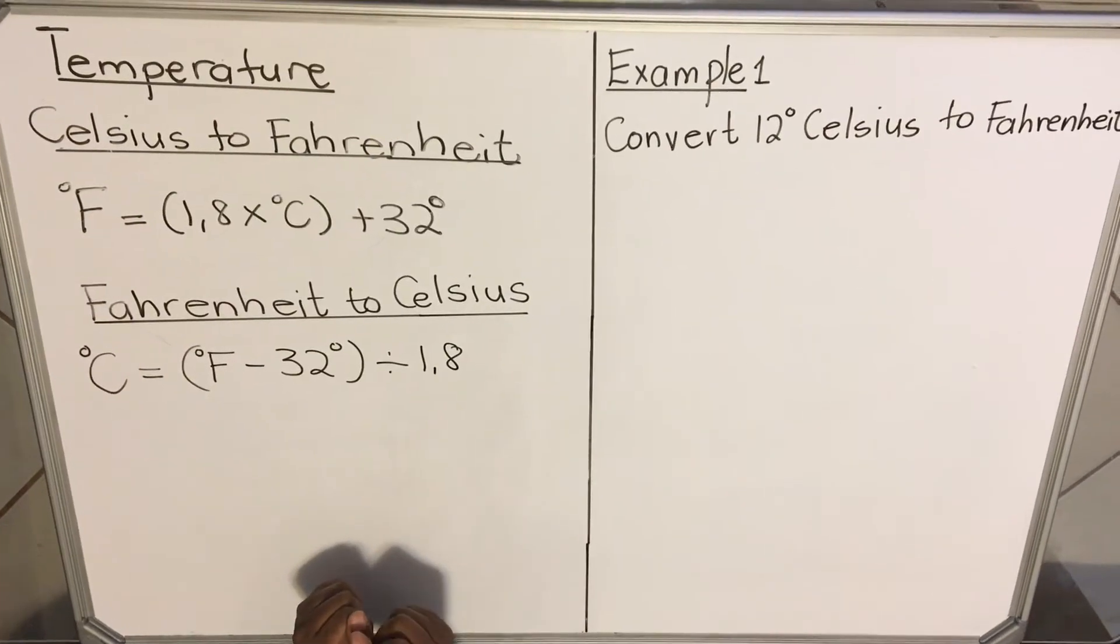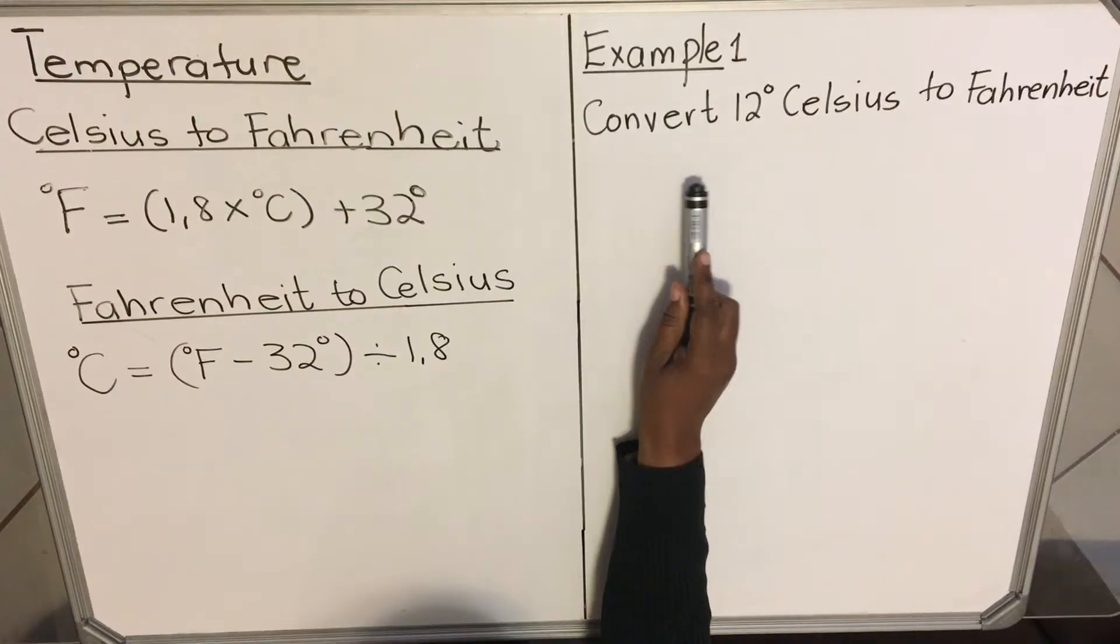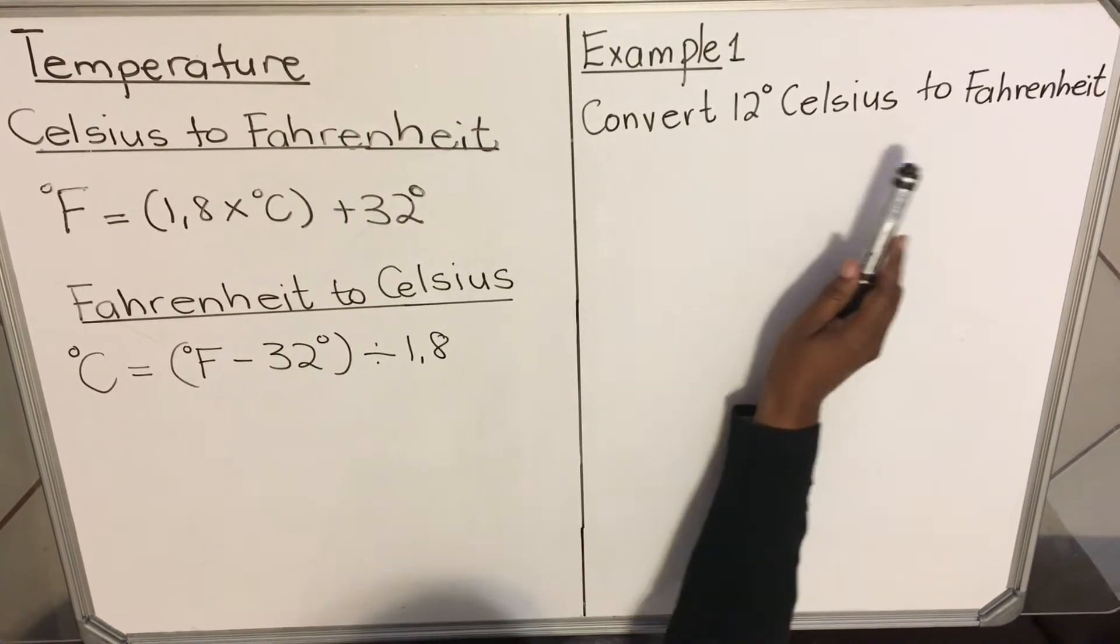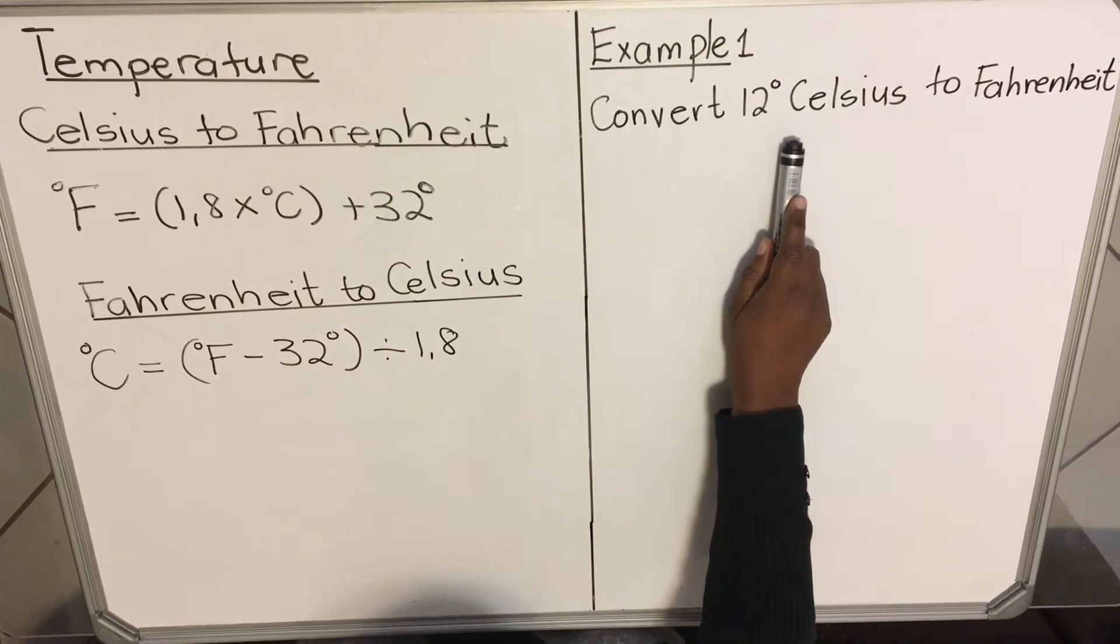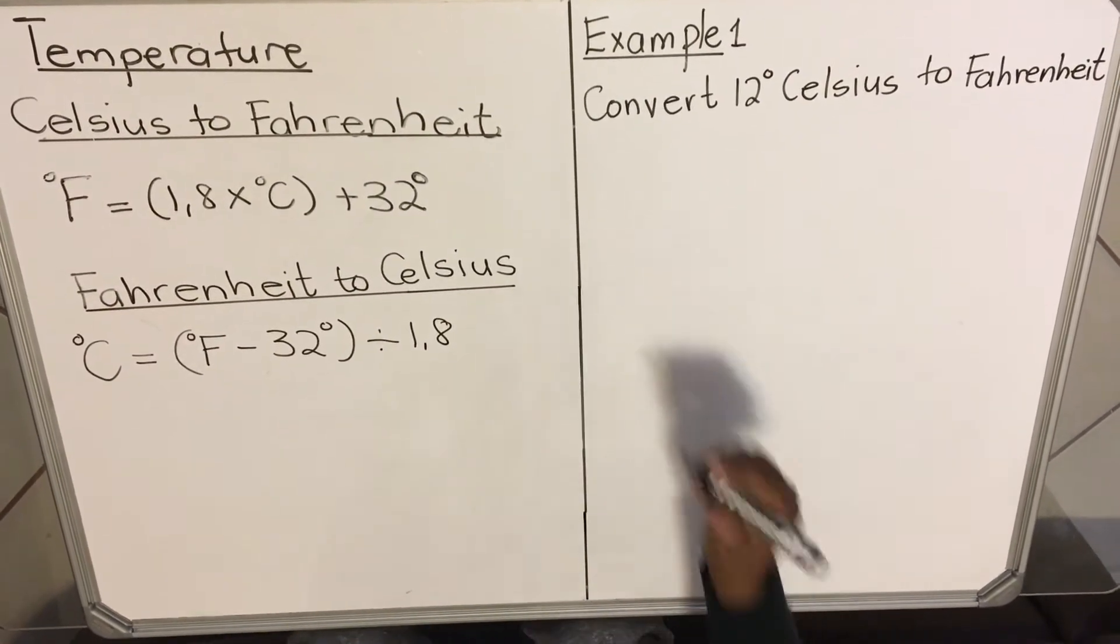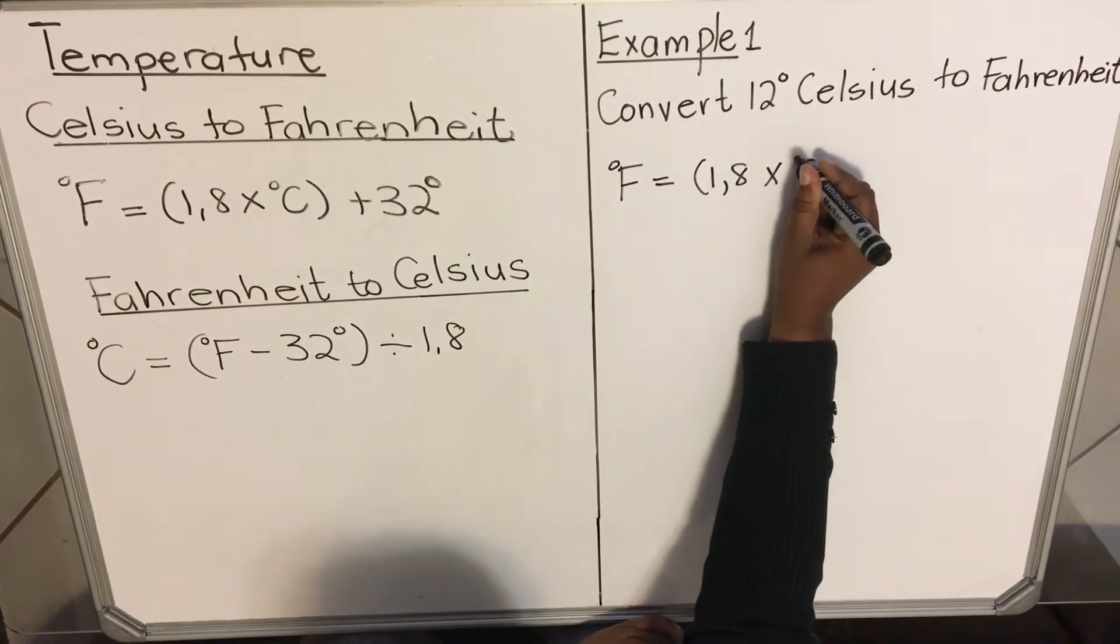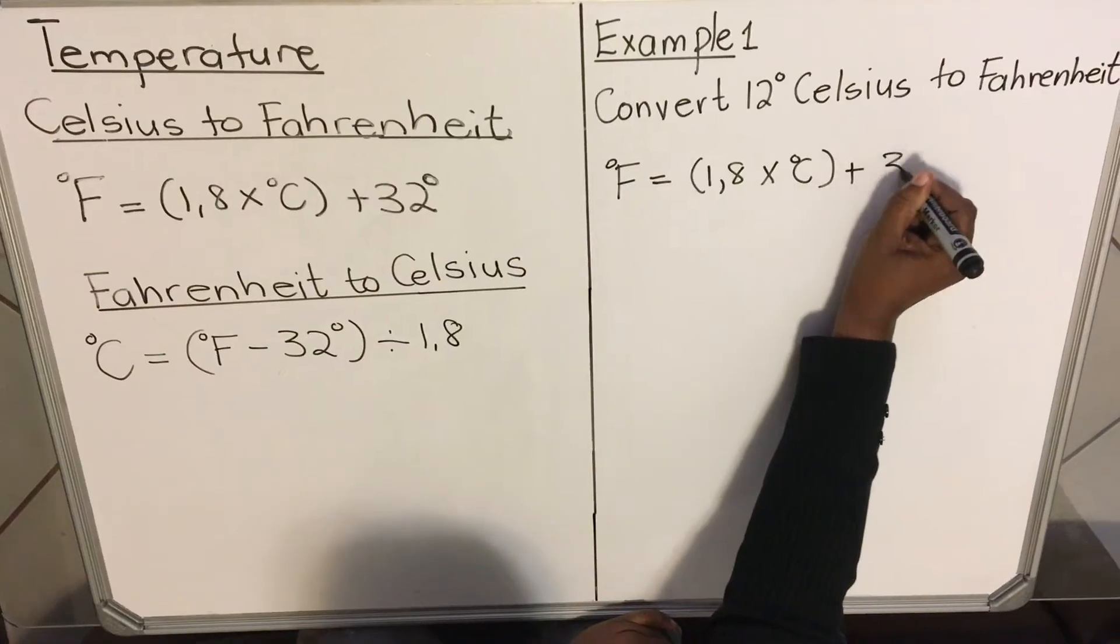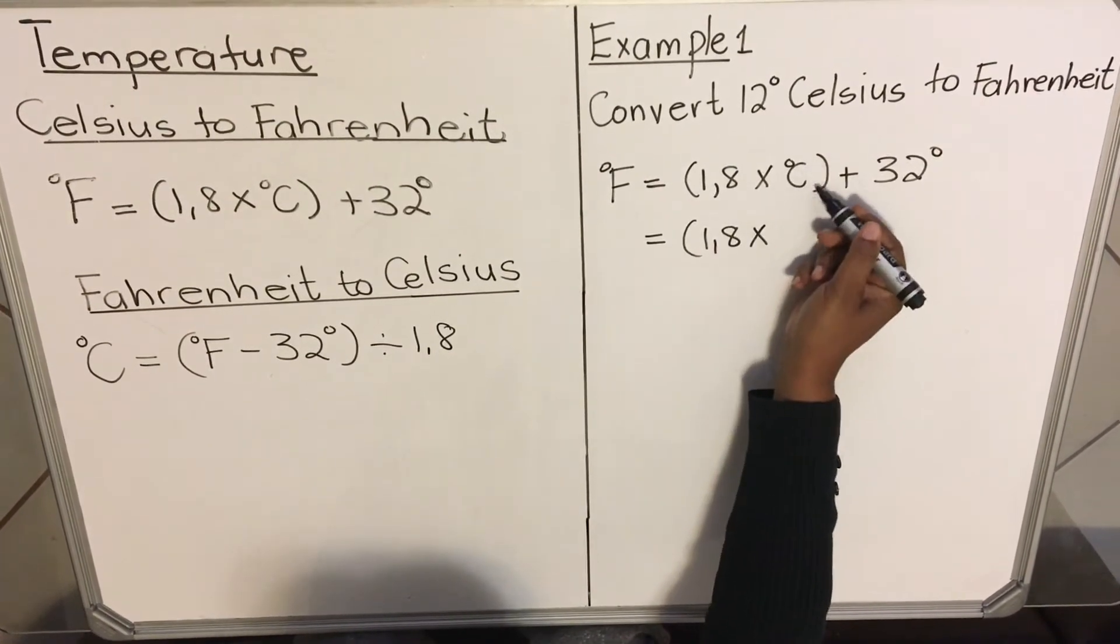Let's look at example one. They say convert 12 degrees Celsius to Fahrenheit. When we are converting from Celsius to Fahrenheit, we're going to use the first formula. Let's write the formula: F = (1.8 × °C) + 32. So it's 1.8 times the degrees you're given - it's 12 degrees - plus 32.